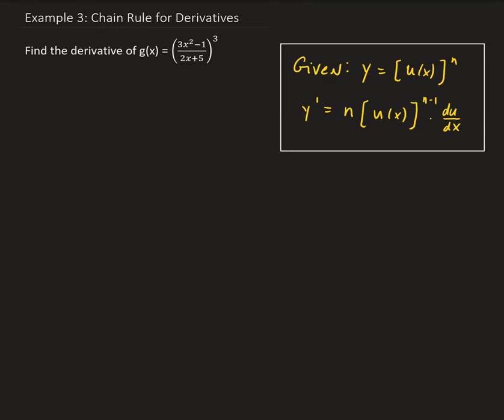In this example, we want to find the derivative of g of x equal to 3x squared minus 1, all divided by 2x plus 5, and all raised to the third power.